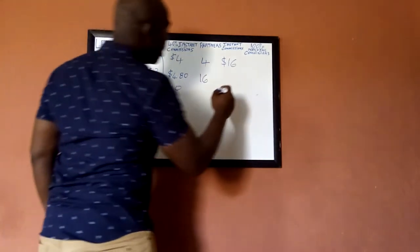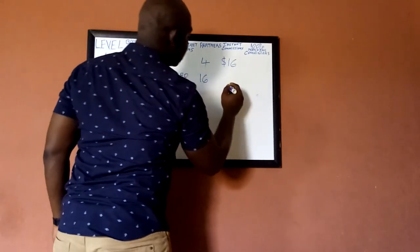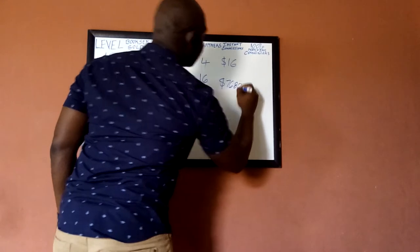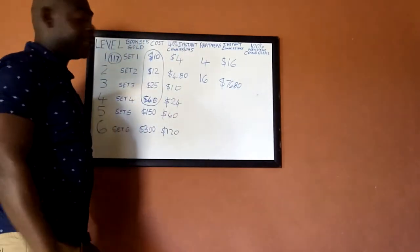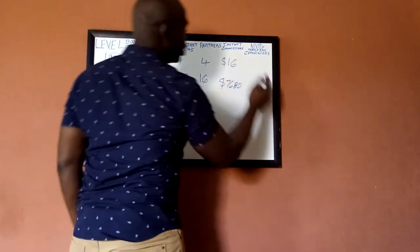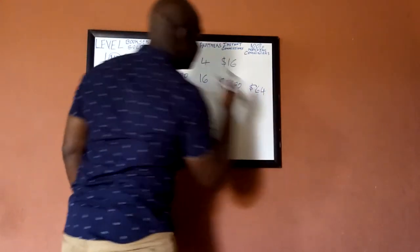This is what would happen here. The second person is you, so you get the instant commission of $17. And the first one would hit your people, so you get a matching commission of $16 times the four, so you get $64.